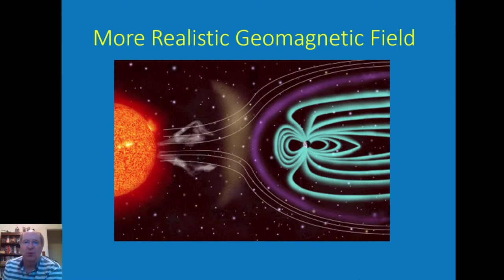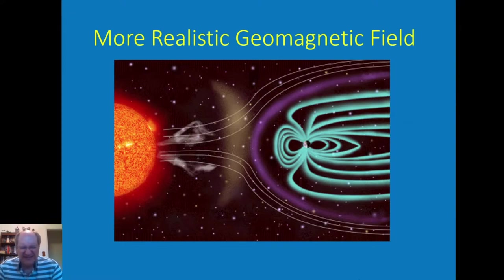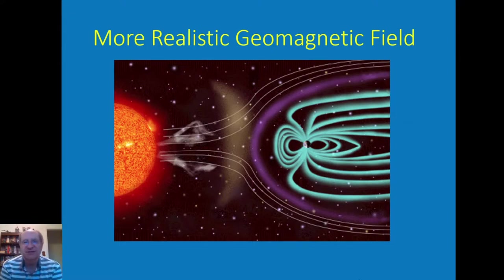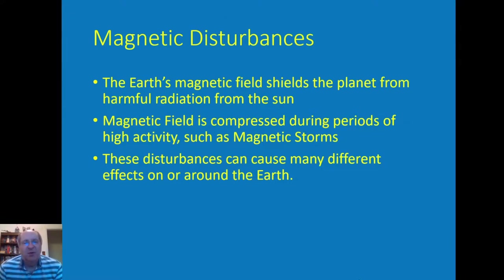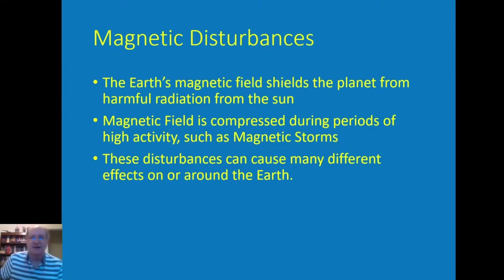Anytime there's a solar prominence or a coronal mass ejection that hits the Earth, it can create all kinds of problems in the magnetic field. The important thing to understand is that the Earth's magnetic field shields the planet from harmful radiation from the sun. But when there's a magnetic storm, that field is compressed and allows a lot of energy to flow down to Earth, especially at the north and south poles.